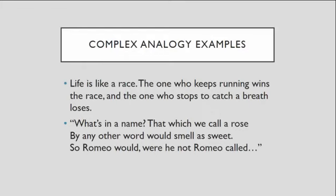When we look at literature and talk about analogies, we can have things that are a little bit more complex. So life being like a race — we've got to account for the runners, we have to account for the one who stops to catch their breath, and we can have those things in life too. An example from Romeo and Juliet is comparing Romeo to a rose. You can change the name of a rose, but it's still a rose — and you can change Romeo's name, but he's still Romeo at his heart and core.